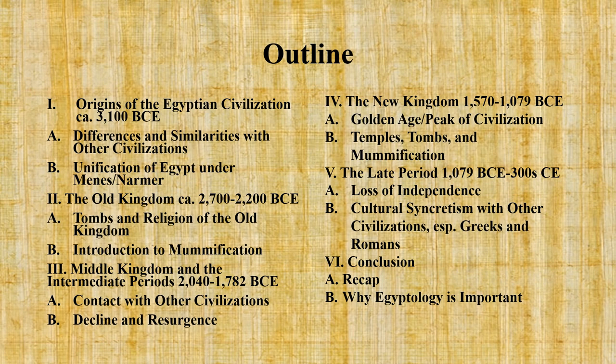Finally, we'll discuss the Late Period from about 1079 BCE to about 300 CE. During this period, the Egyptian civilization lost its independence. It also experienced increased cultural syncretism with other civilizations, especially the Greeks and the Romans.